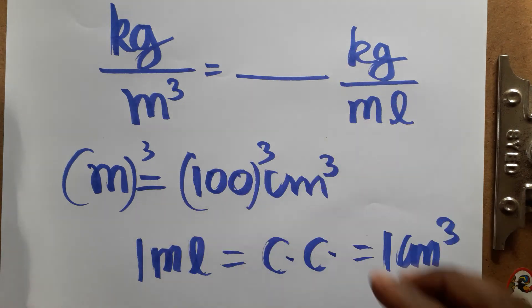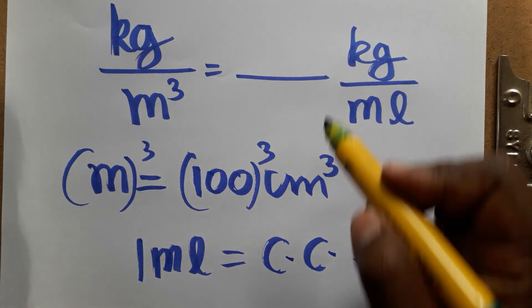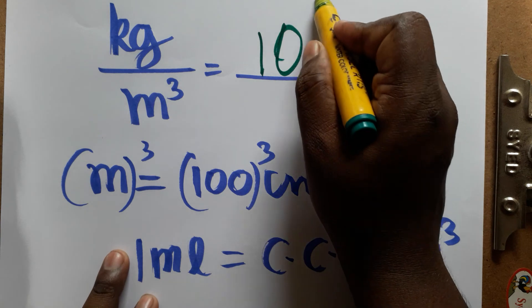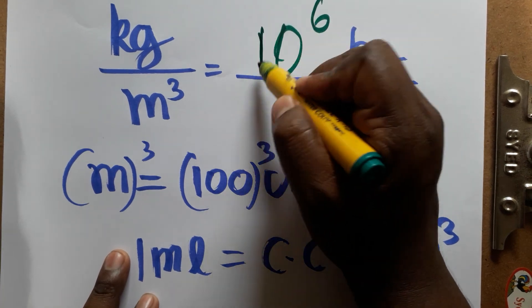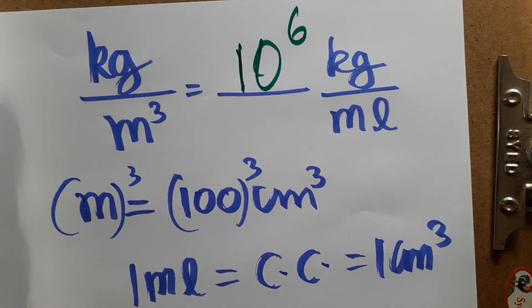So 1 kg per meter cube is equal to 10 to the power of minus 6 kg per ml. Thank you for watching my channel, please subscribe.